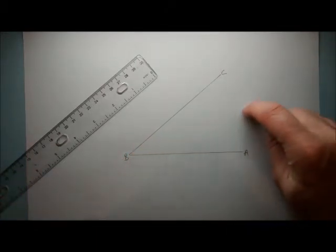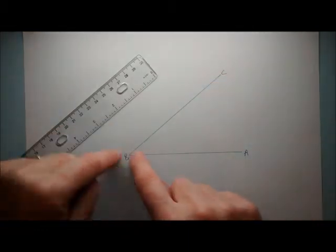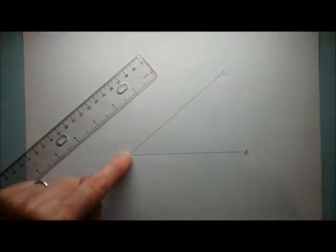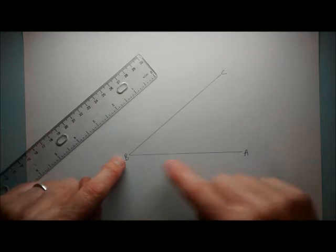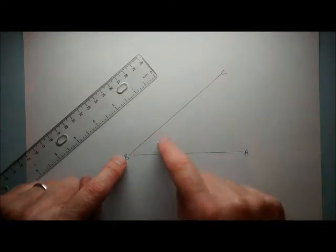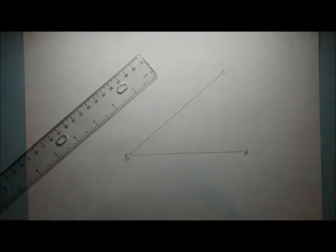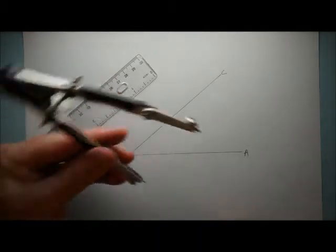We're going to construct a line which will always be equidistant from lines BC and BA, going straight through the middle and cutting that angle exactly in half. So we take our compasses.